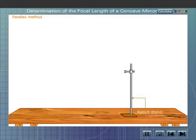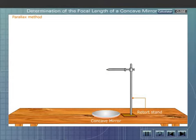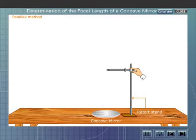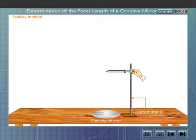Let us now find out the focal length by the parallax method. Place the concave mirror on a table as shown. Fix a pin to the clamp of a retort stand which can be raised and lowered. Adjust the tip of the pin so that it is vertically above the pole of the mirror. Move the pin until its inverted image is seen. Adjust the position of the pin so that the tip of the image coincides with the tip of the pin. Generally, when we look from one side to the other side of the mirror, the pin and its image move separately.